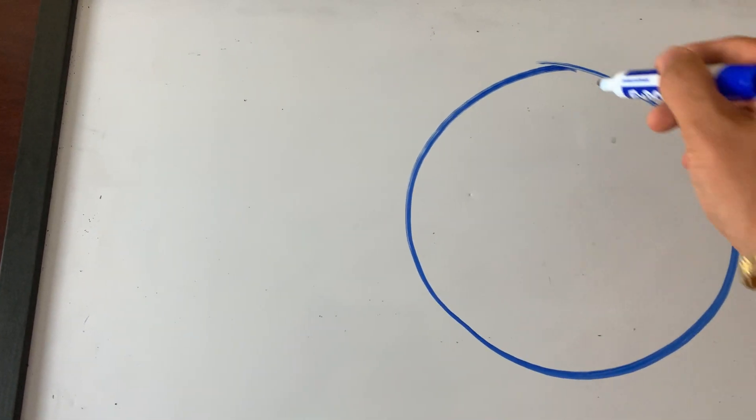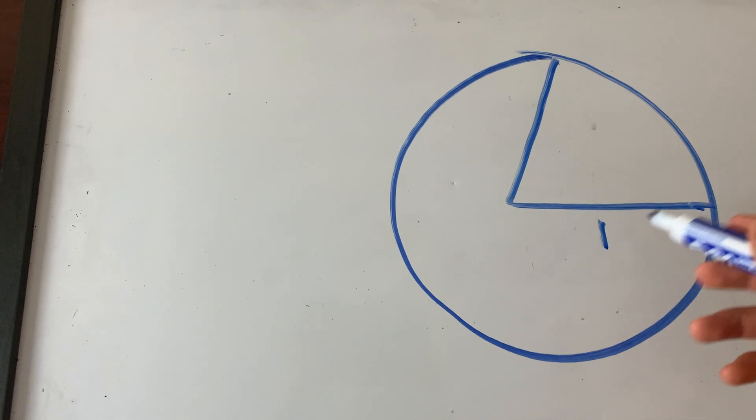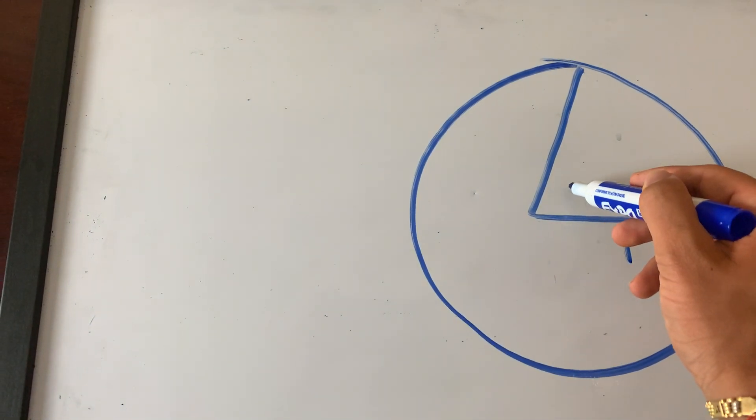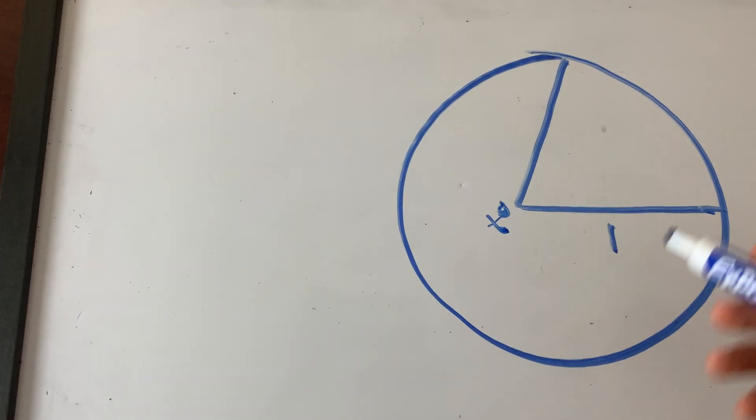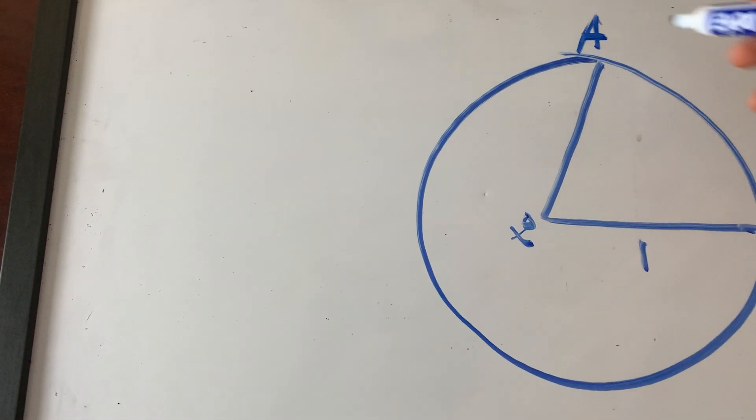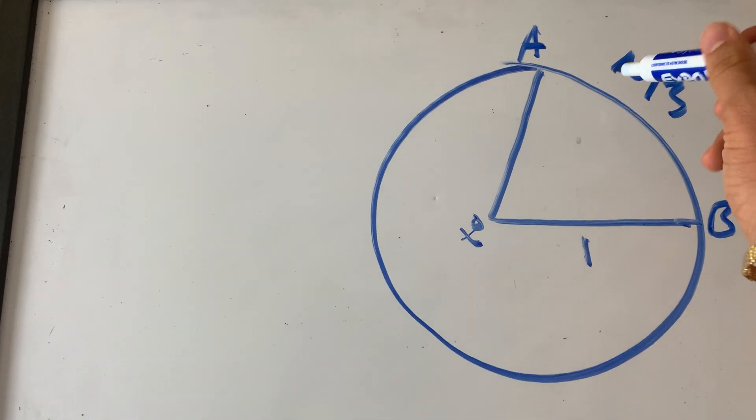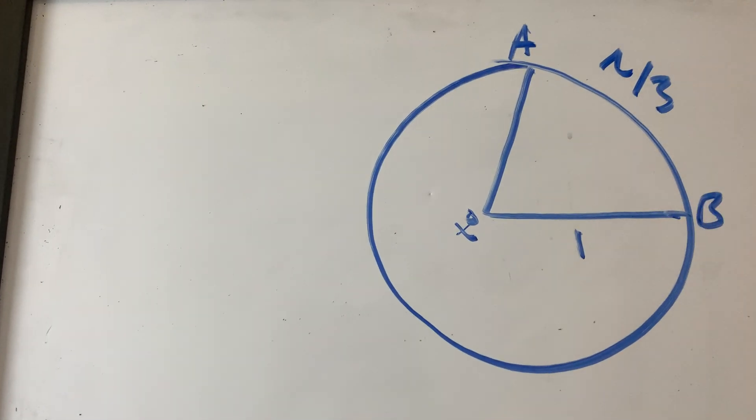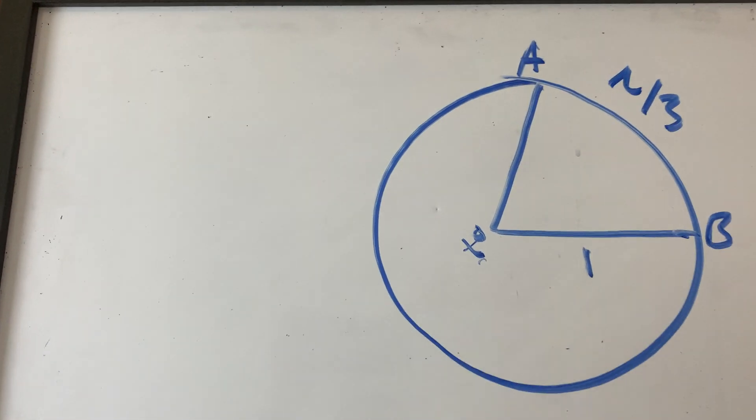If I give you a circle, let me say radius is one, all right? Radius is one. I want you to find what x equals. x is the angle, okay? And this arc length, arc length AB is pi over three. Okay that says pi, all right guys? It's a pi. That's not an n, that's not an r, that's pi. I want you to find what x equals, guys. How would you do this?